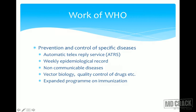The work of the WHO includes prevention and control of specific diseases. There is an automatic telex reply service and weekly epidemiological reports — started way back, still a very important source of health data covering all new epidemics and diseases. Other work includes non-communicable diseases, vector biology, quality control of drugs, follow-up, and the Expanded Program of Immunization. These are examples of how WHO prevents and addresses specific diseases.